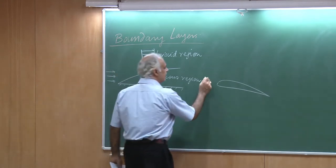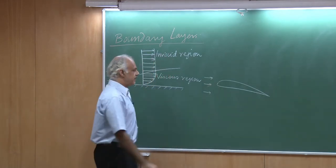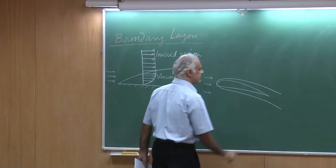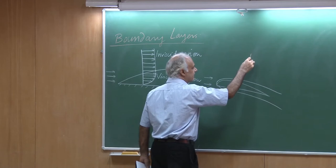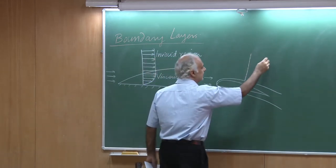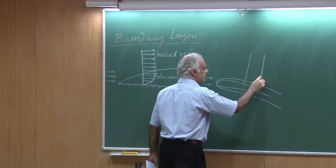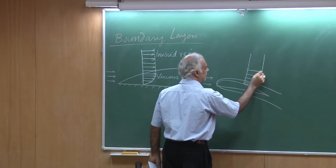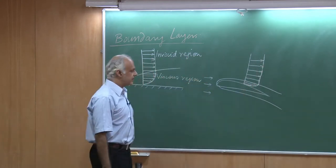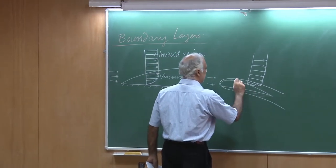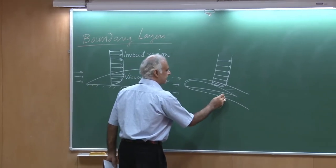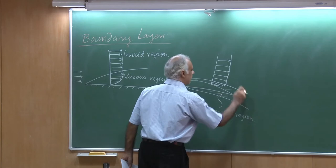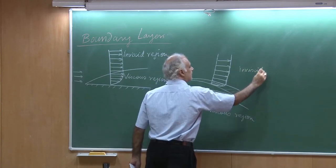Likewise, for flow past an airfoil, if I have flow coming into an airfoil, there is a region where the shear stresses are large and the viscous effects are important. If I drew a profile somewhere along the surface, I would see inviscid flow outside and a boundary layer on the inside. This viscous region is what we refer to as the boundary layer; the outside region is the inviscid region.